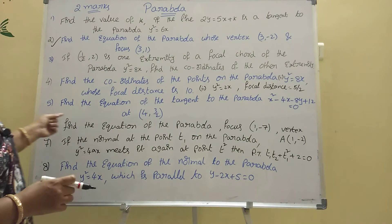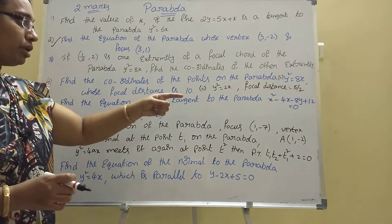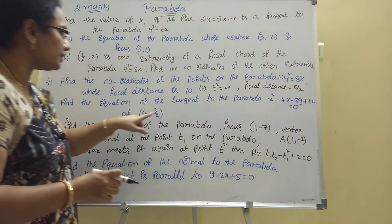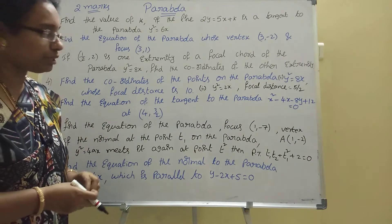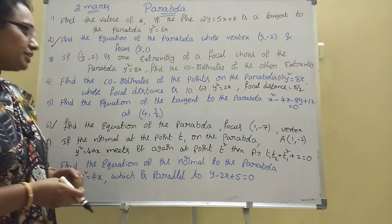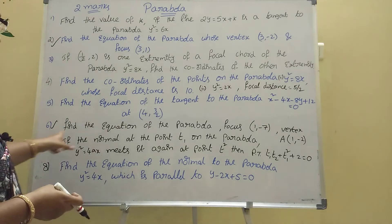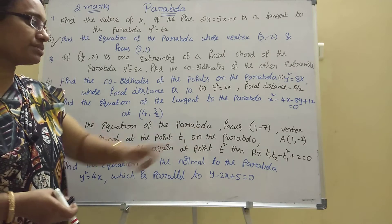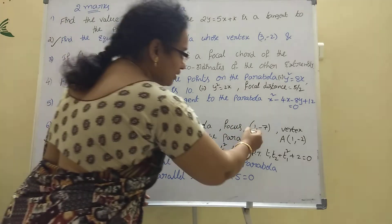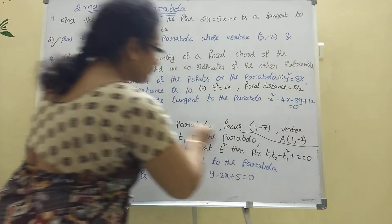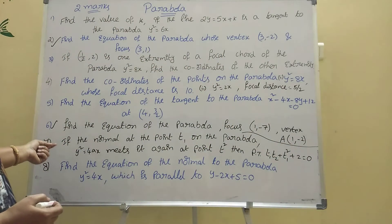Fifth one: find the equation of the tangent to the parabola at that point (4, 3/2). You find the tangent equation of the tangent. Sixth one: find the equation of the parabola given focus and vertex. This is similar to the earlier one with focus and vertex.